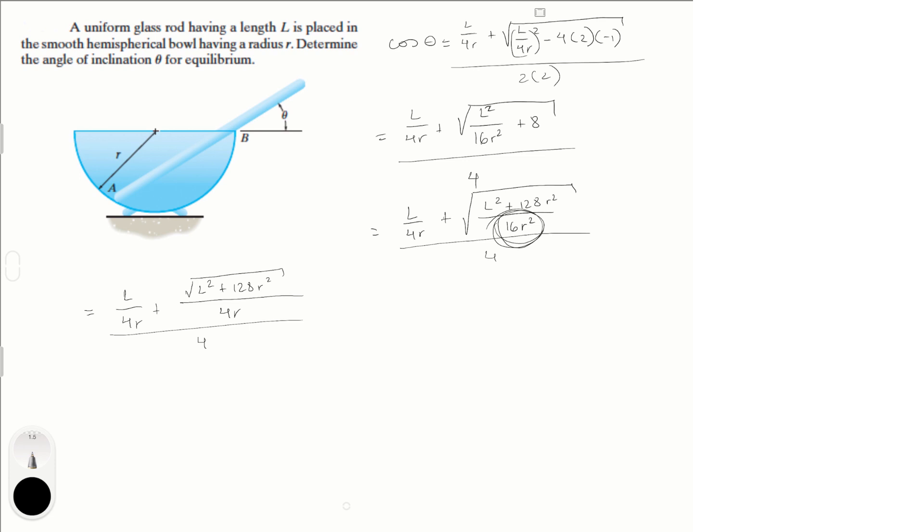So this is equal to, let me write, cosine theta is equal to L plus square root L square plus 128R square. This is all basic math guys. I mean, not basic math, engineering. Basic engineering math, let's call it that. Algebra. Over 16R.